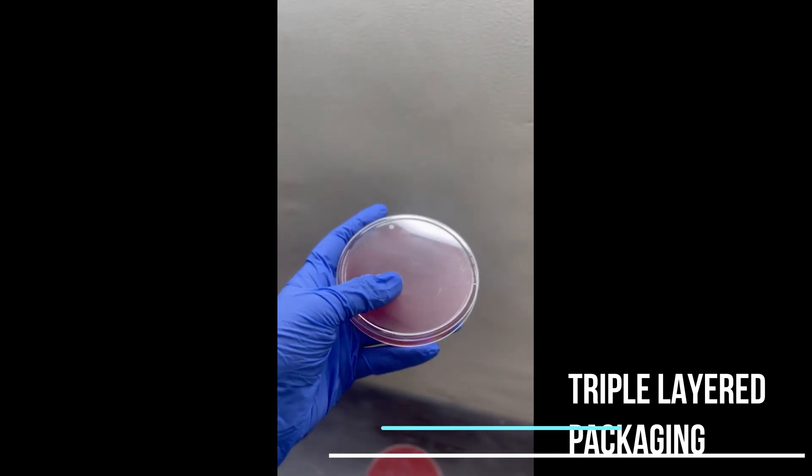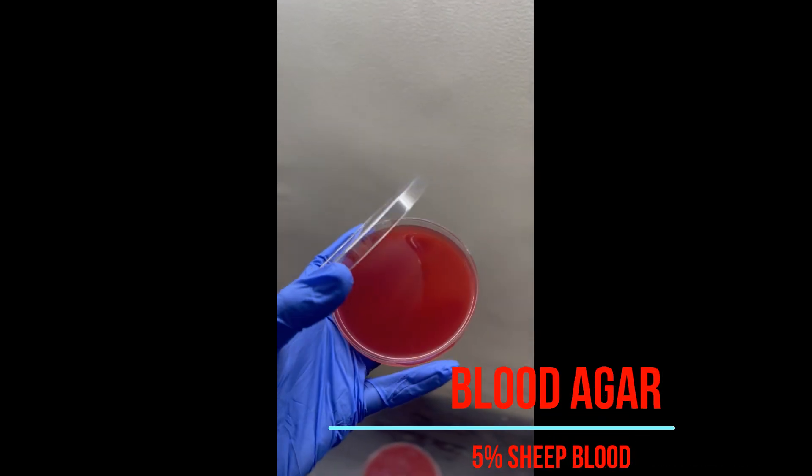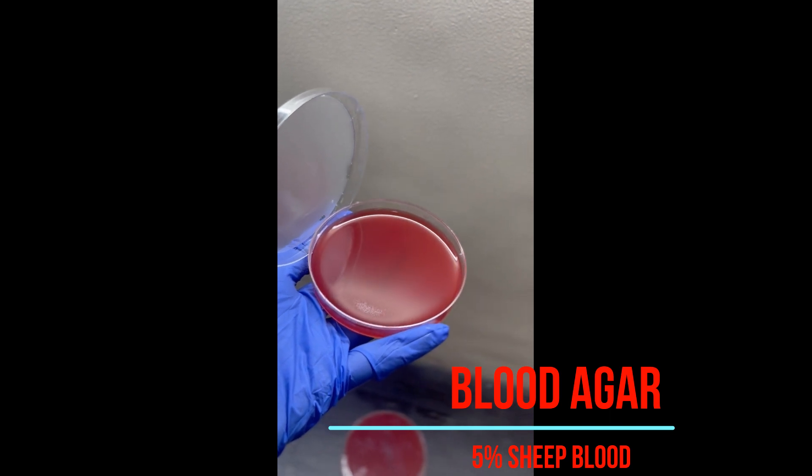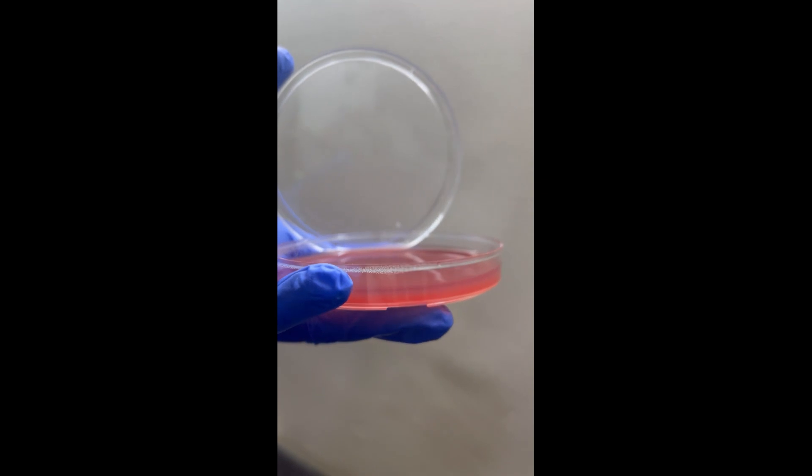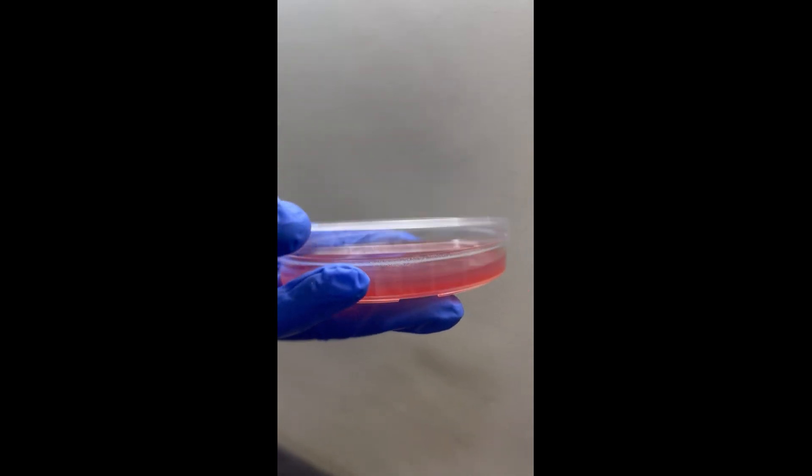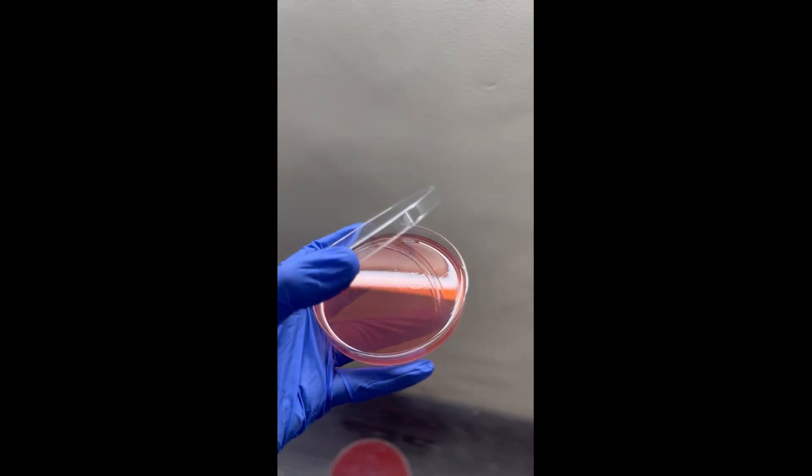Now what I noticed about their sheep blood agar was that the surface was quite smooth and there was no breakage of any sort even after it was transported to the laboratory. The depth was also about 4 mm which is actually needed for the cultivation of bacteria.